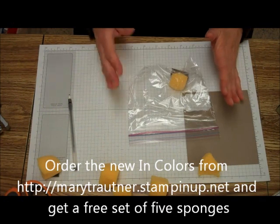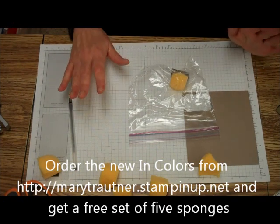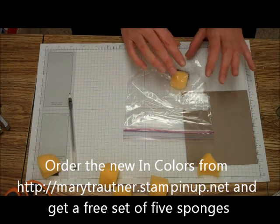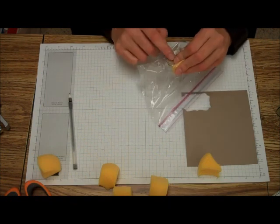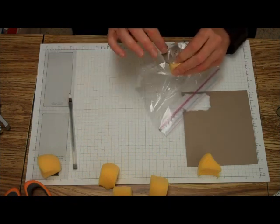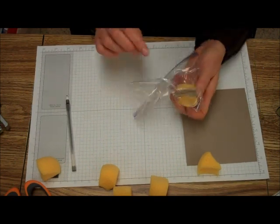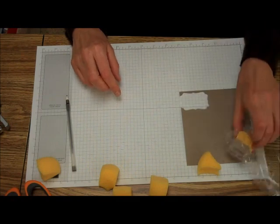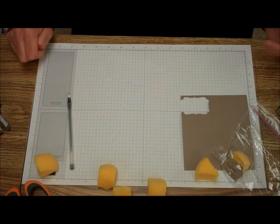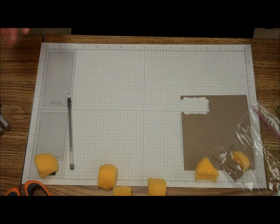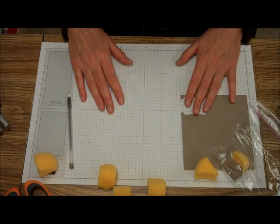Now, if anyone would order all five of the new in colors from me, I will send you a set of sponges. I won't write on it—you can do your own handwriting if you want. You'll get five sponges with all the colors on them, all the special colors. So just remember to order from me at marytroutner.stampinup.net. Thanks for visiting, and happy stamping!